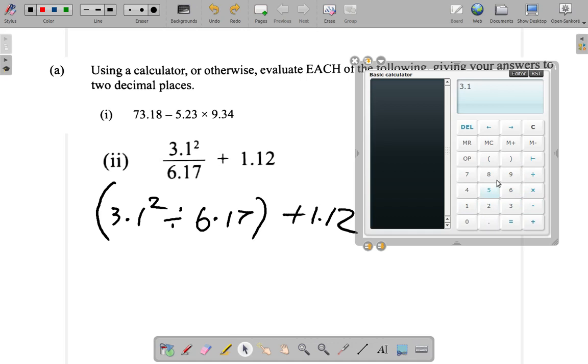I don't see a square button on this calculator, but you know it's 3.1 times 3.1—that's 9.61. Now that 9.61 divided by 6.17, so you have 9.61 divided by 6.17, that gives 1.57.